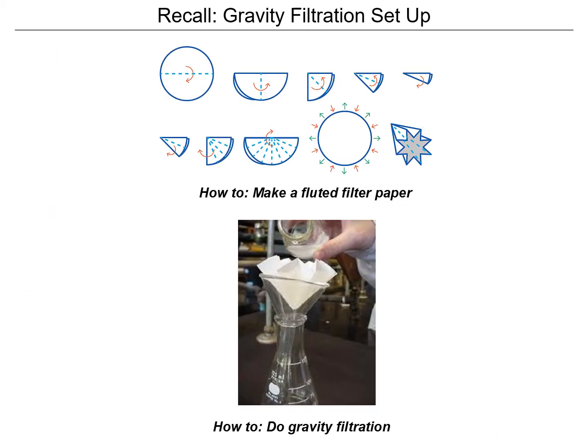To recall, this is the procedure to make a folded filter paper. We're going to make this star-shaped filter paper that is placed inside one of our funnels, and the liquid is let to pass through while the magnesium sulfate stays trapped in the paper.